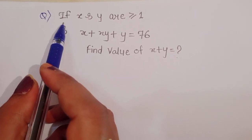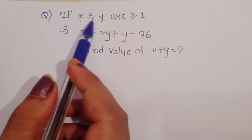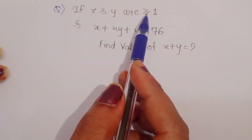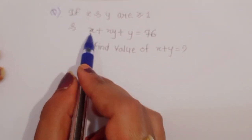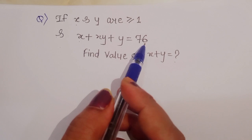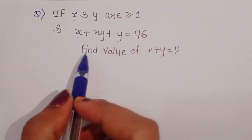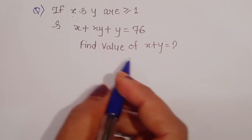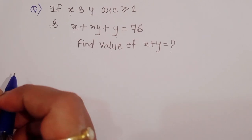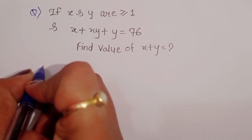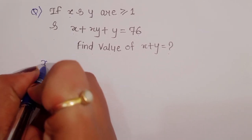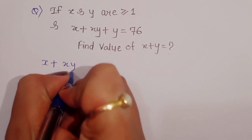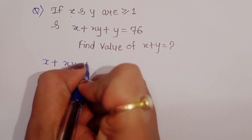The question is: given that x and y are positive integers (greater than or equal to 1) and x plus xy plus y is equal to 76, we have to find the value of x plus y. Let's see the solution.